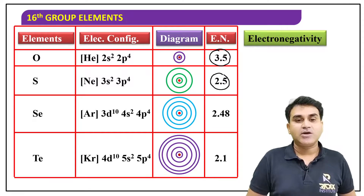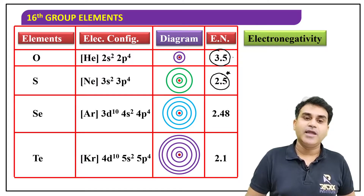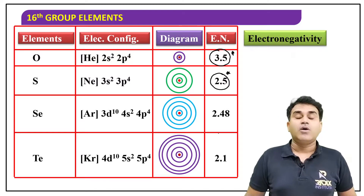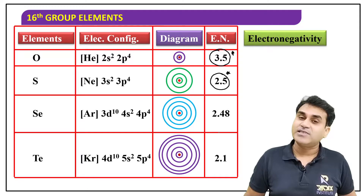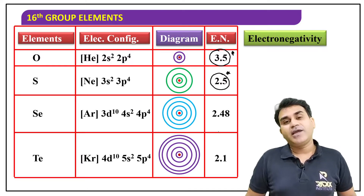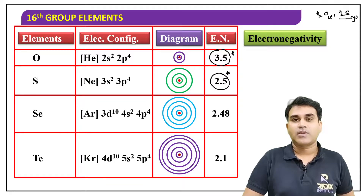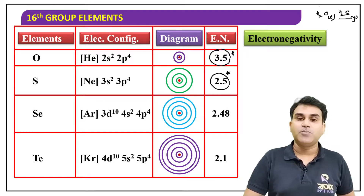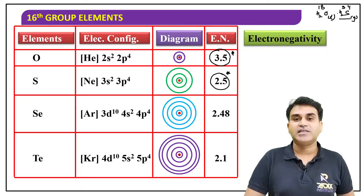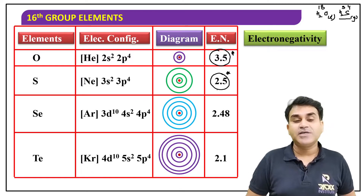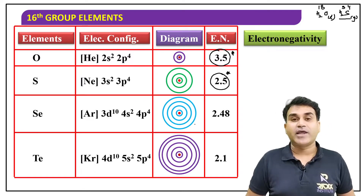So that's about electronegativity — remember these values. Down the group, electronegativity decreases — no factual question will be asked on specific values, but these values help in conceptual explanations like: why is H₂O a liquid but H₂S a gas, even though H₂S has a higher molecular weight? The electronegativity concept helps answer that.